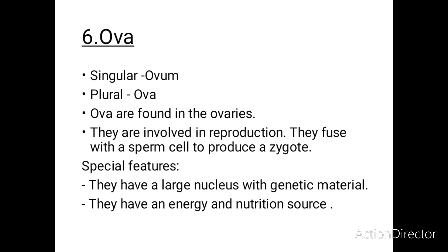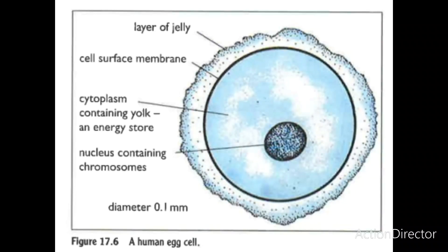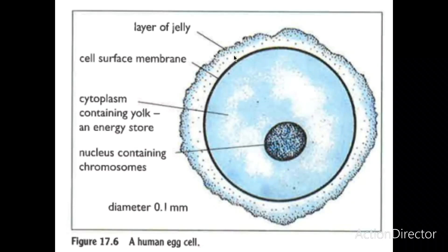Eggs, or ova, are found in the ovaries and are involved in reproduction — they fuse with a sperm cell to produce a zygote. The features enabling them to carry out reproduction are a large nucleus with genetic material and an energy and nutrition source. In this diagram, a human egg cell possesses a nucleus with chromosomes, a cytoplasm with energy and nutrients, a cell surface membrane, and a layer of jelly.